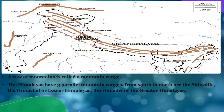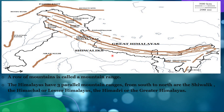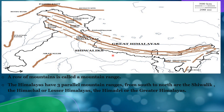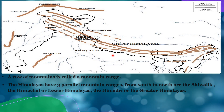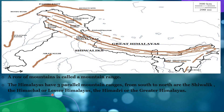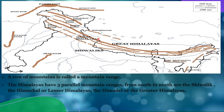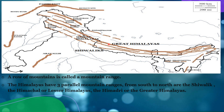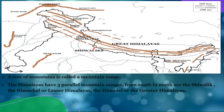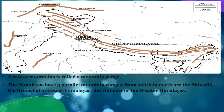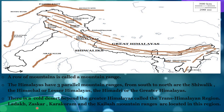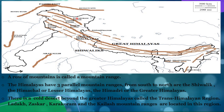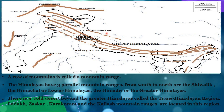A row of mountains is called a mountain range. The Himalayas have three parallel mountain ranges from south to north: the Shivalik or the outermost Himalayas — called Shivalik because from space it looks like Lord Shankar's hair or Jata — then the Himachal or the lesser Himalayas, followed by the Himadri or the greater Himalayas. The Shivalik is the youngest mountain range, and as we move from south to north the height of the Himalayas increases. There is a cold desert beyond the greater Himalayas called the Trans-Himalayan region. Ladakh, Zaskar, Karakoram and Kailash range are located in this region.